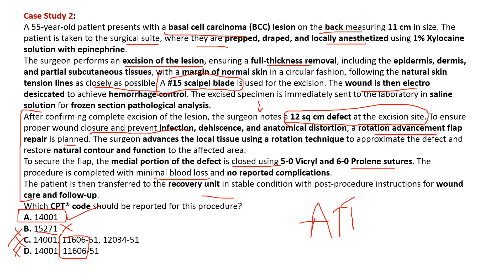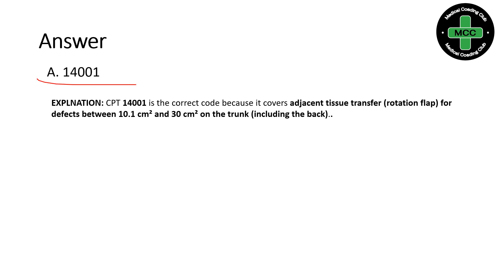Cross-checking: yes, the answer is CPT 14001, which is the correct code because it covers adjacent tissue transfer for a defect between 10 to 30 square centimeters on the trunk location. So these two case studies are very important for the integumentary section — they have been asked many times. I hope you got an idea on two different concepts: one was graft and one was the ATT procedure.